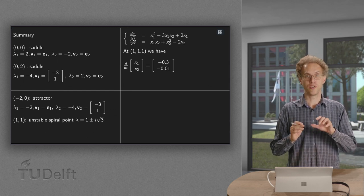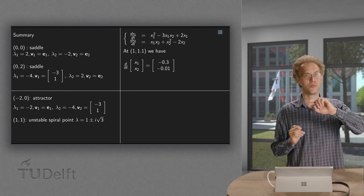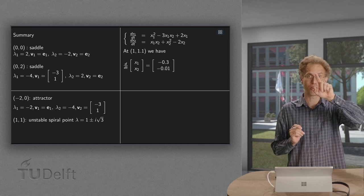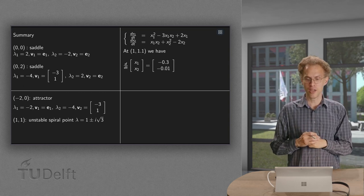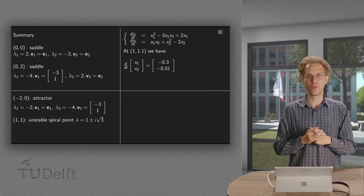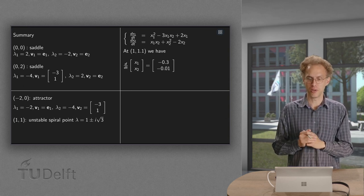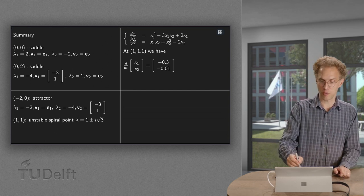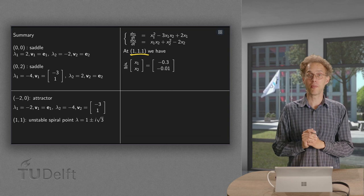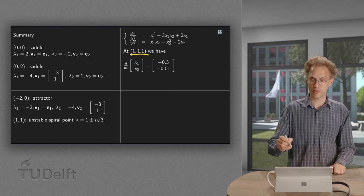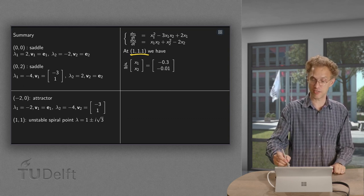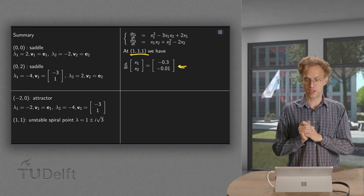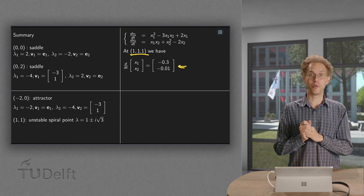And then if you have a spiral point, we want to know whether we go counterclockwise or clockwise around this. Well the easiest way is to plug in a point which is very close to the spiral point. So (1,1) is our spiral point. So (1, 1.1) is very close to that. This gives us a right hand side, will give us a direction: -0.3, -0.01. So we will go there to the left.